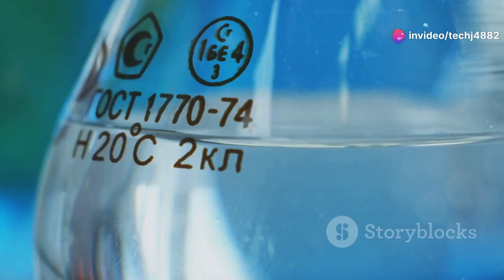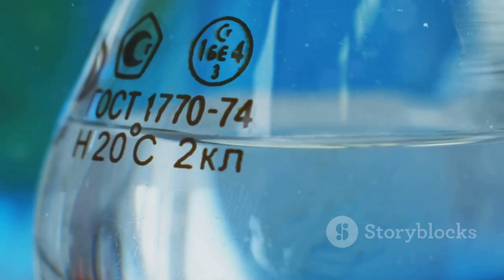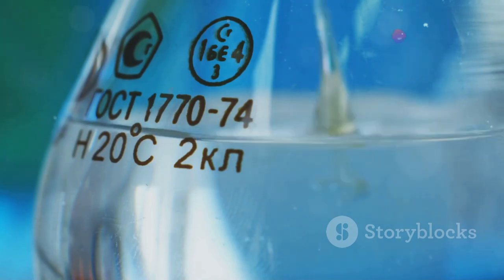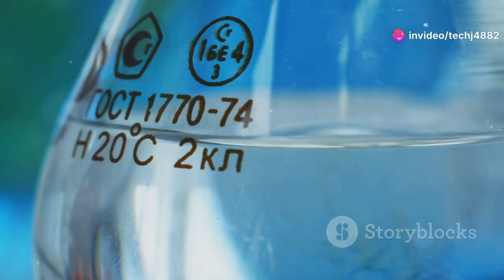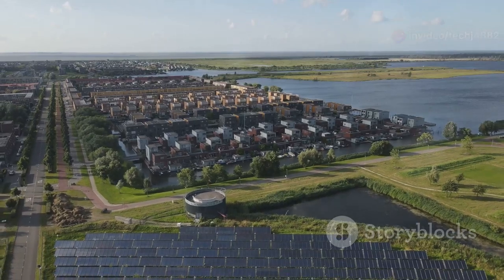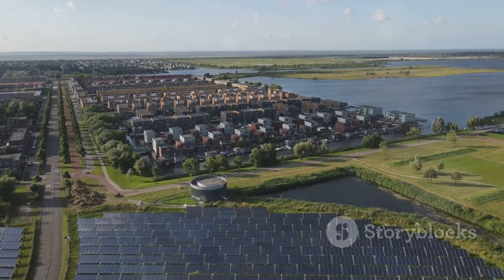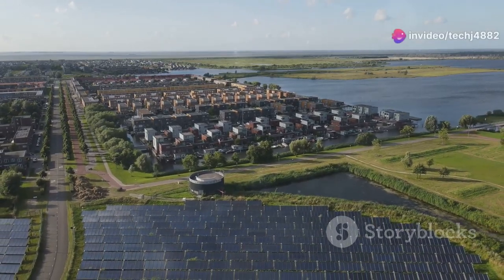We're seeing advancements in smart grids, which use AI to optimize energy distribution and reduce waste. These grids can predict energy demand and adjust supply accordingly. Plus, there's research into fusion energy, which, if we can crack it, has the potential to provide near-limitless clean energy. Community solar projects are also gaining traction.